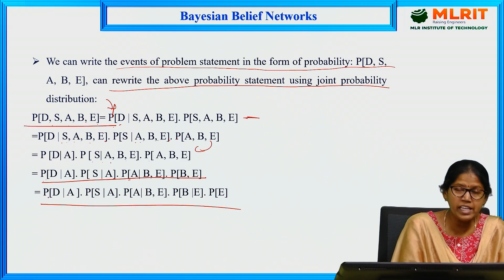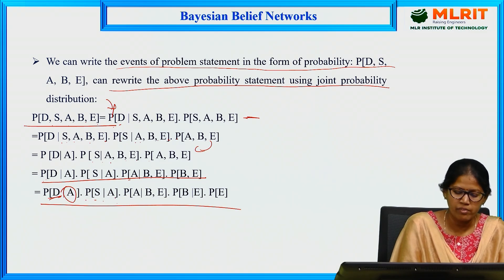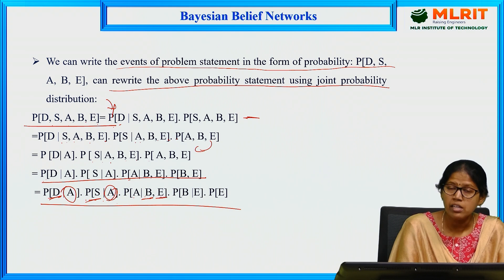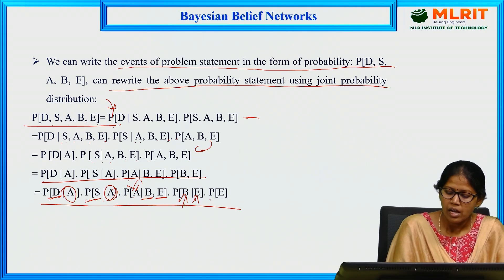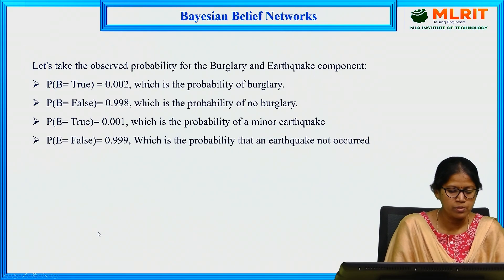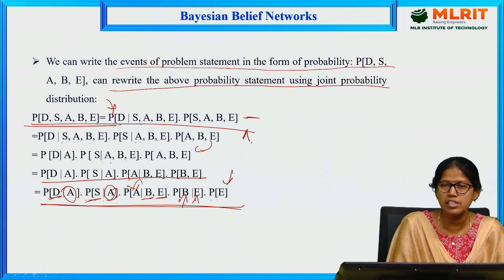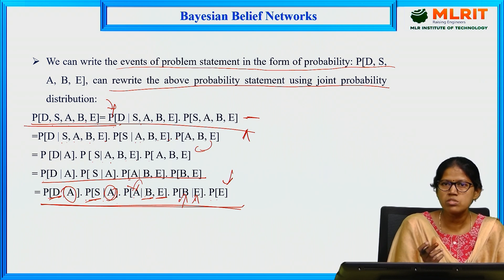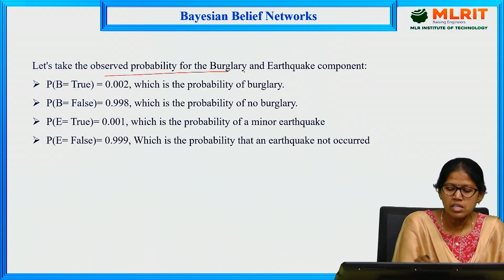Probability of D given A means whenever the alarm rings, David calls. Probability of S given A means whenever the alarm rings, Sophia calls. Probability of A given B and E means whenever either burglary or earthquake happens, then the alarm rings. For independent variables, we eliminate those conditional probabilities since there is no information dependency. We keep only variables where a conditional dependency exists.